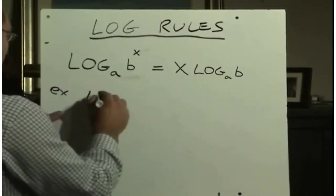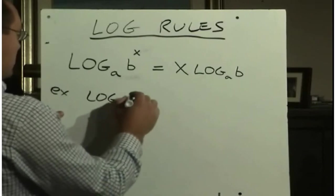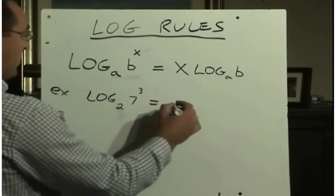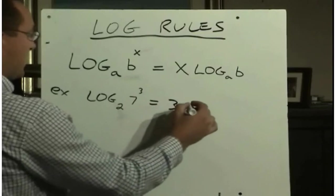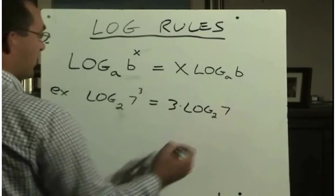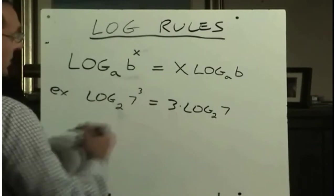So for example, if we had log base 2 of 7 to the power of 3, we could write this as 3 times log base 2 of 7. So any exponent can be written in front of the logarithm as a product.